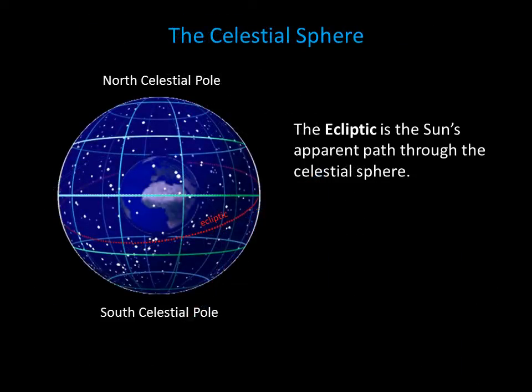We have one more circle to add to our celestial sphere: the ecliptic. The ecliptic is the apparent path of the sun over the course of the year. To visualize the ecliptic, imagine you have a device that allows you to see the stars during the day. If you go outside at noon every day and mark where the sun is relative to the stars on the celestial sphere, over the course of the year those marks will trace out a line — this line is called the ecliptic.